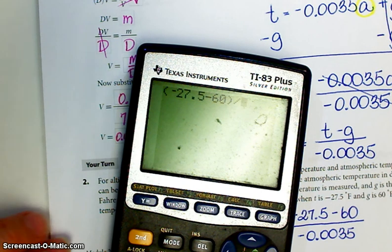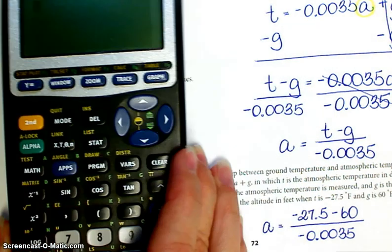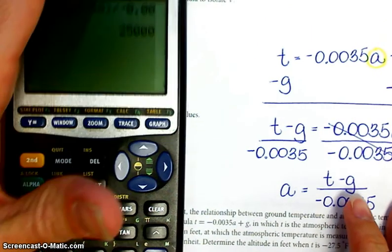Hit the divided by button. And then I have a negative sign again. 0.0035. Hit the enter button, which is kind of an equal button. And your.